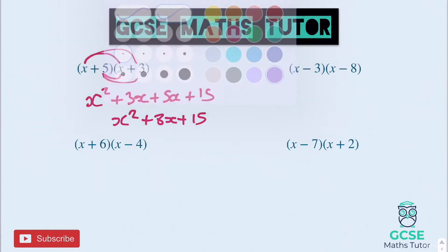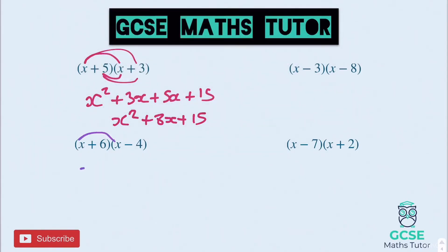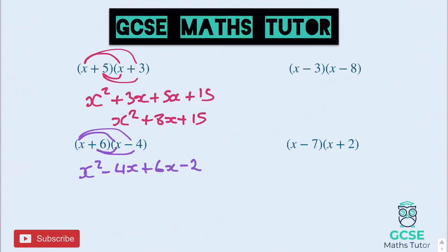On to the next one. x times x is x squared. x times negative 4 is negative 4x. Plus 6x. And then 6 times 4 is 24, so minus 24. Tidying up the middle pieces: negative 4 add 6 is 2, so x squared plus 2x minus 24.